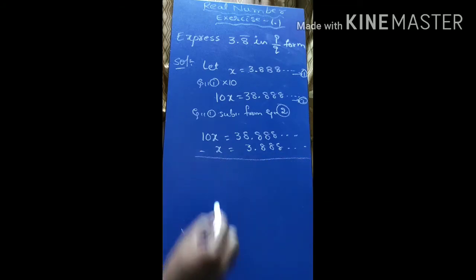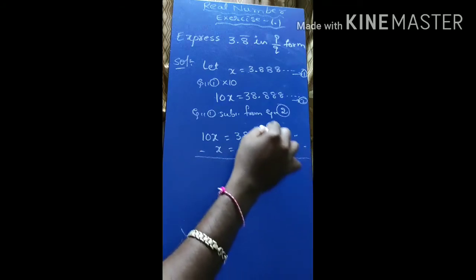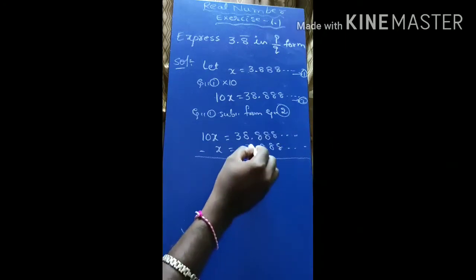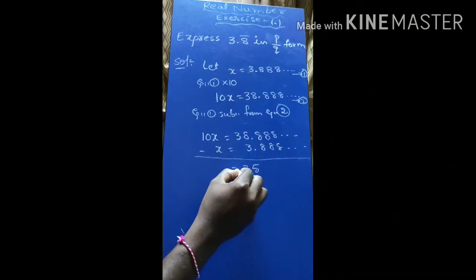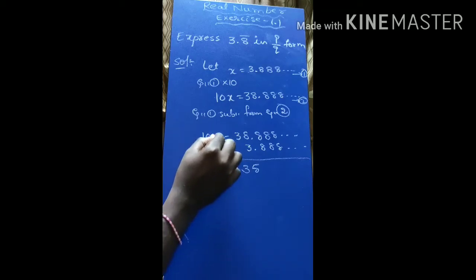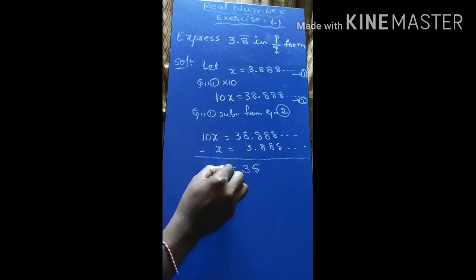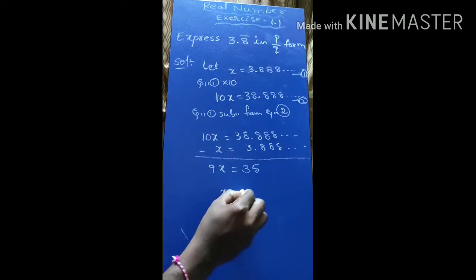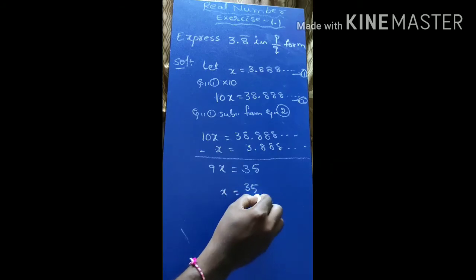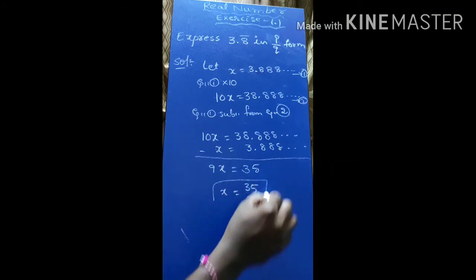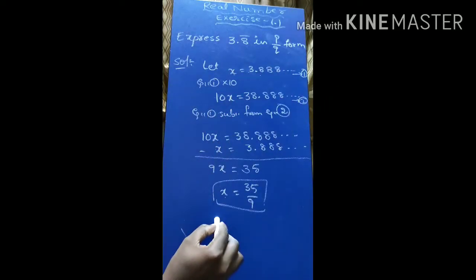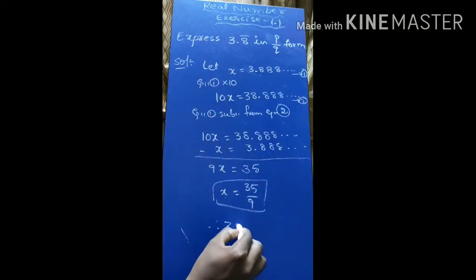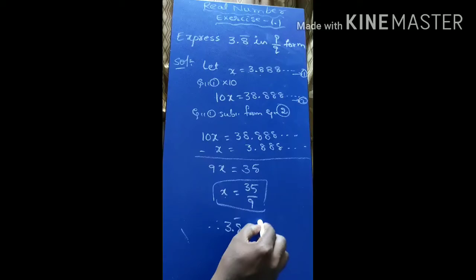When we do the subtraction, the repeating decimal digits cancel out and we get zero on that side. So it is 38 minus 3, which gives 35. When we subtract 10x from 1x, it is equal to 9x. Therefore x is equal to 35 by 9. So x is 3.8 bar, therefore 3.8 bar is equal to 35 by 9.